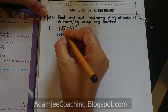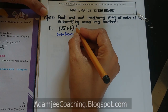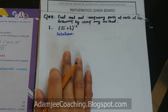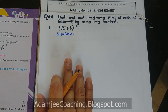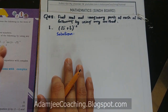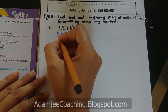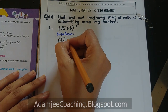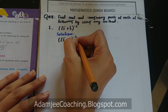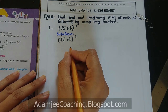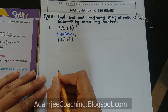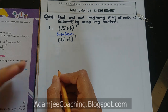Now the first part: (√2 + i√2)^(-2). The whole exponent is negative. When the exponent is negative, we make it positive. If the numerator is negative, the denominator becomes positive, and if the denominator is negative, the numerator becomes positive.